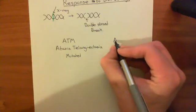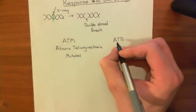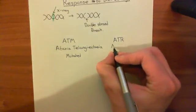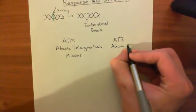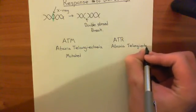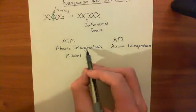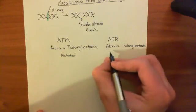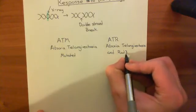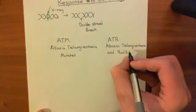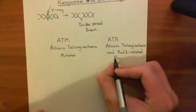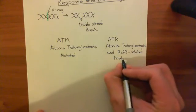And then there's another one, which is called ATR, which stands for Ataxia telangiectasia and RAD3-related protein. Some people pronounce that Ataxia telangiectasia. I think both ways of pronouncing it are okay. So ATR stands for Ataxia telangiectasia and RAD3-related protein.